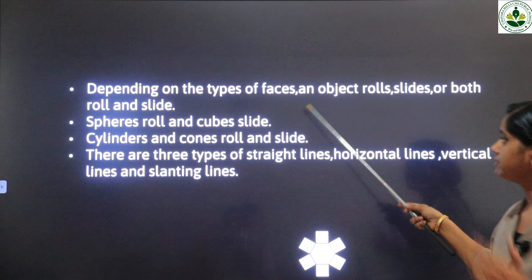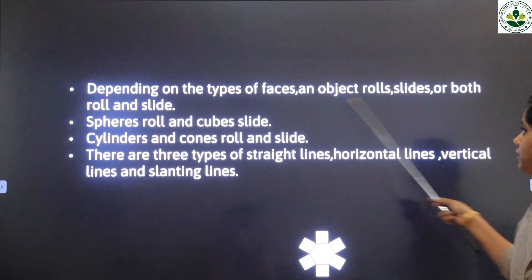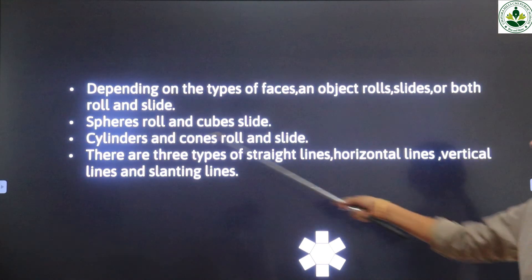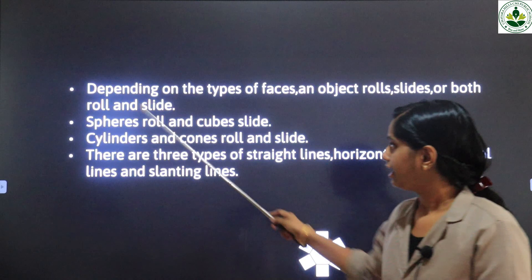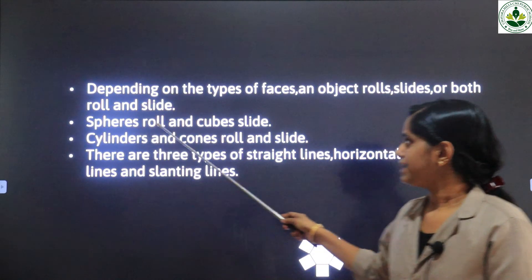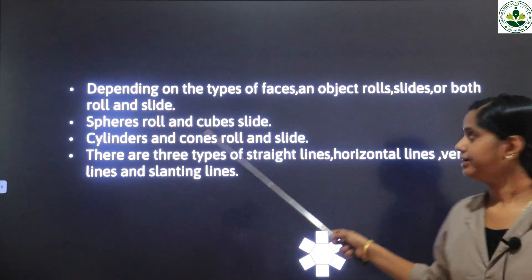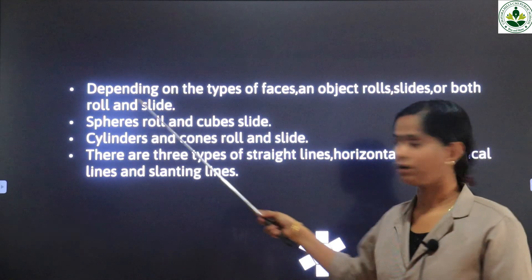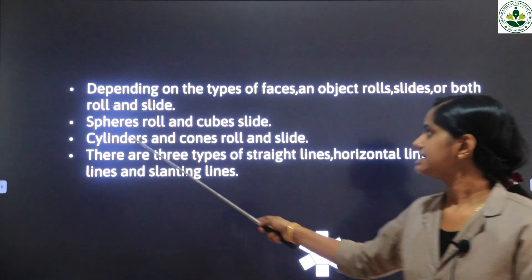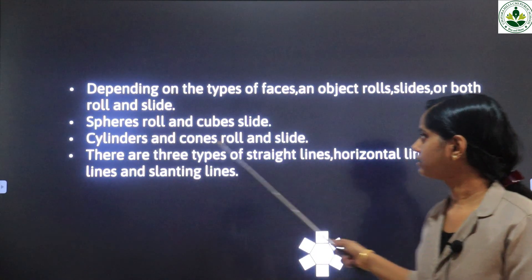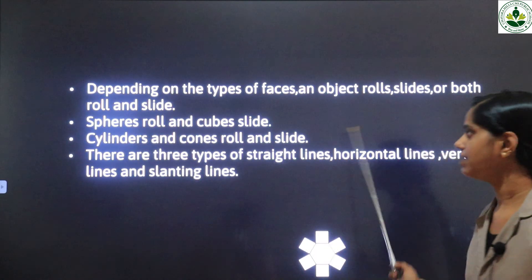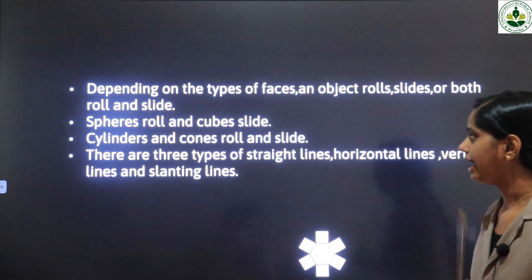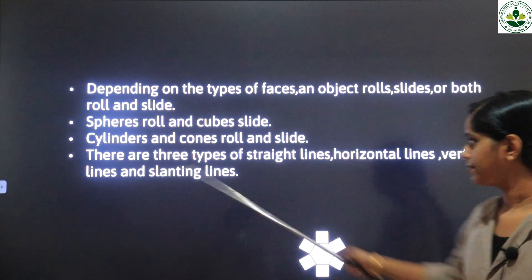Depending on the types of faces, an object can roll, slide, or both roll and slide. Spheres roll, and cubes slide. Cylinders and cones both roll and slide.